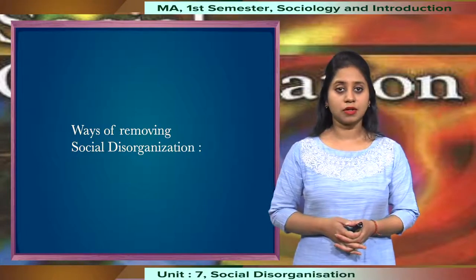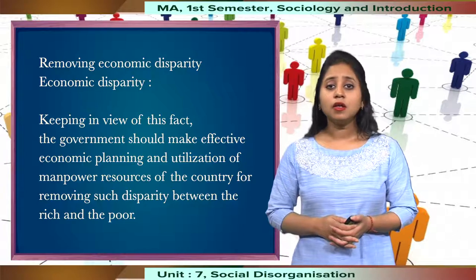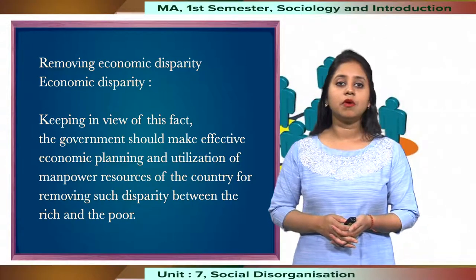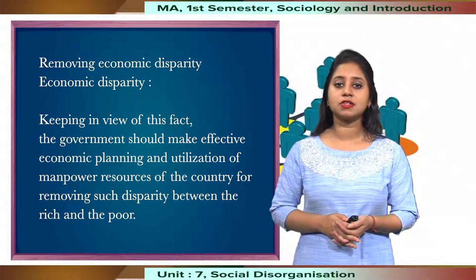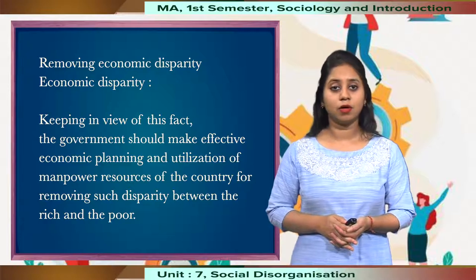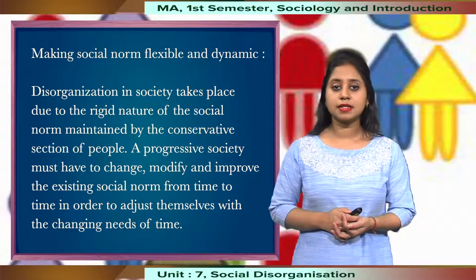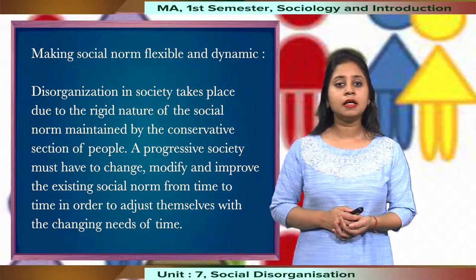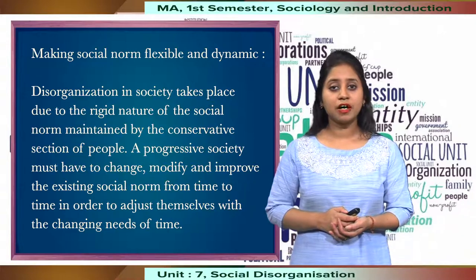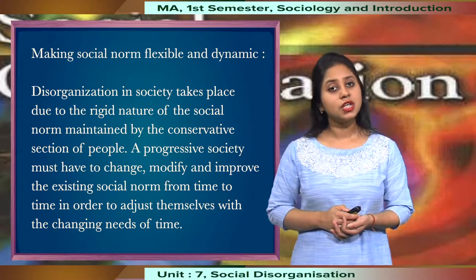Now, how do we remove social disorganisation? Removing economic disparity could be one way. Economic disparity in modern society is a major cause of concern, and the government should make effective economic planning and utilisation of manpower and poor resources of the country for removing disparity between the rich and the poor. Then, making social norms flexible and dynamic — a progressive society must change, modify, and improve existing social norms from time to time to adjust to the changing needs of the time.